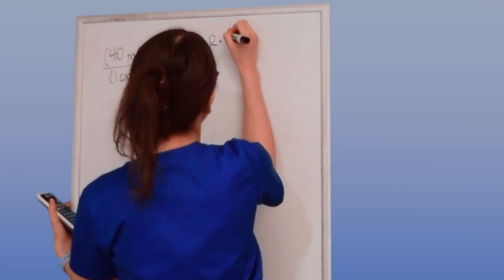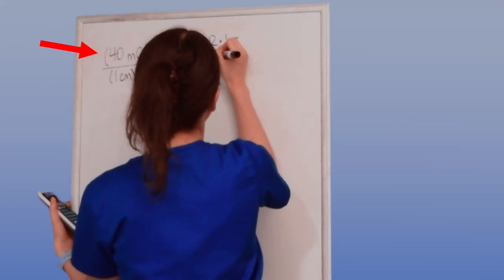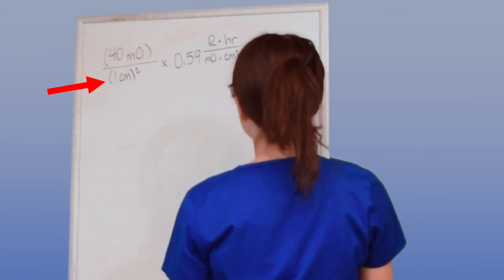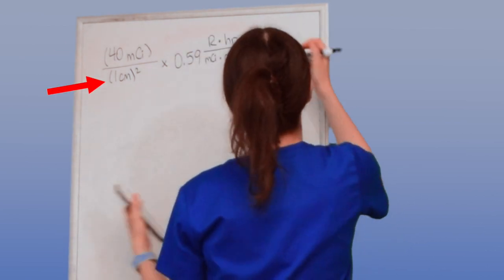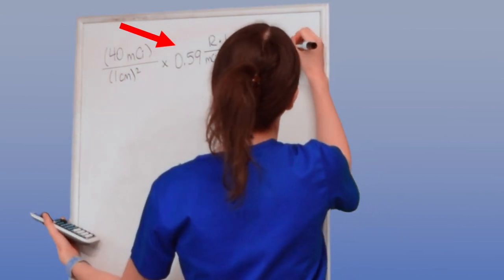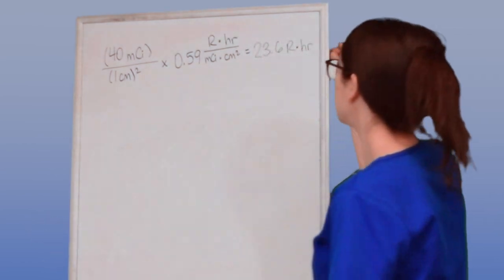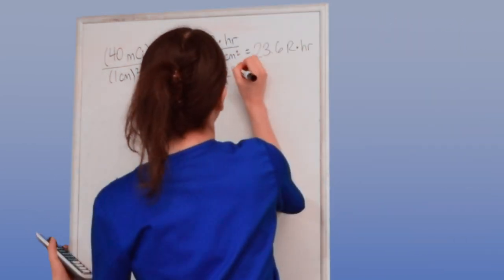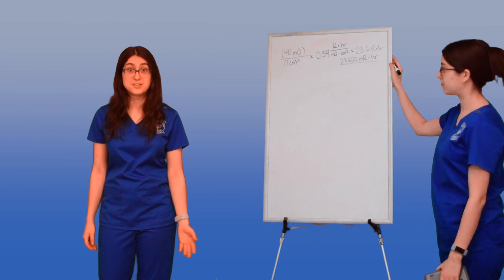My source is 40 millicuries, so that's my activity. If I'm grabbing it with my hand, my distance is pretty much none. We're going to use one centimeter, and then I'm just going to multiply that times my gamma constant. And what do I get? 23.6 roentgens per hour, 23,600 millirentgens per hour.